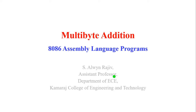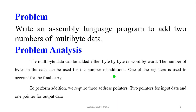Welcome to the microprocessor and microcontroller lecture series. Here we are going to see how to write the assembly language program for multi-byte addition in 8086 microprocessor. The problem is to write the assembly language program to add two numbers of multi-byte data. Multi-byte means it may be 2 bytes (16-bit data) or 4 bytes (32-bit data).